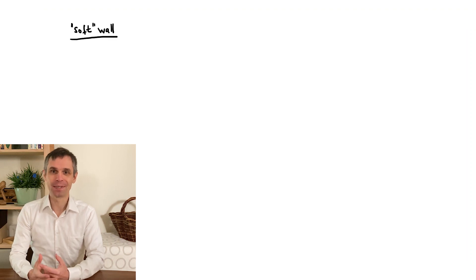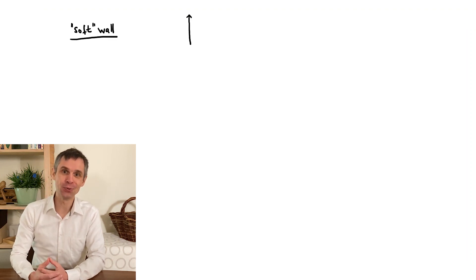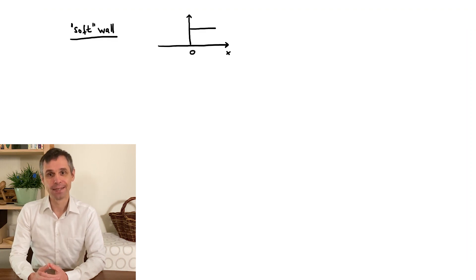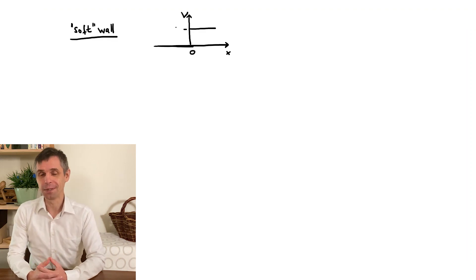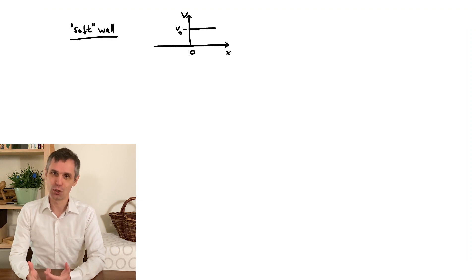So, we now contrast this to a case where we really make use of our new regions, where the potential is constant and finite. What I sketched here is known as a soft wall. It will assist our discussion a lot if we designate names to these regions, indicated here by the Roman numerals 1 and 2.